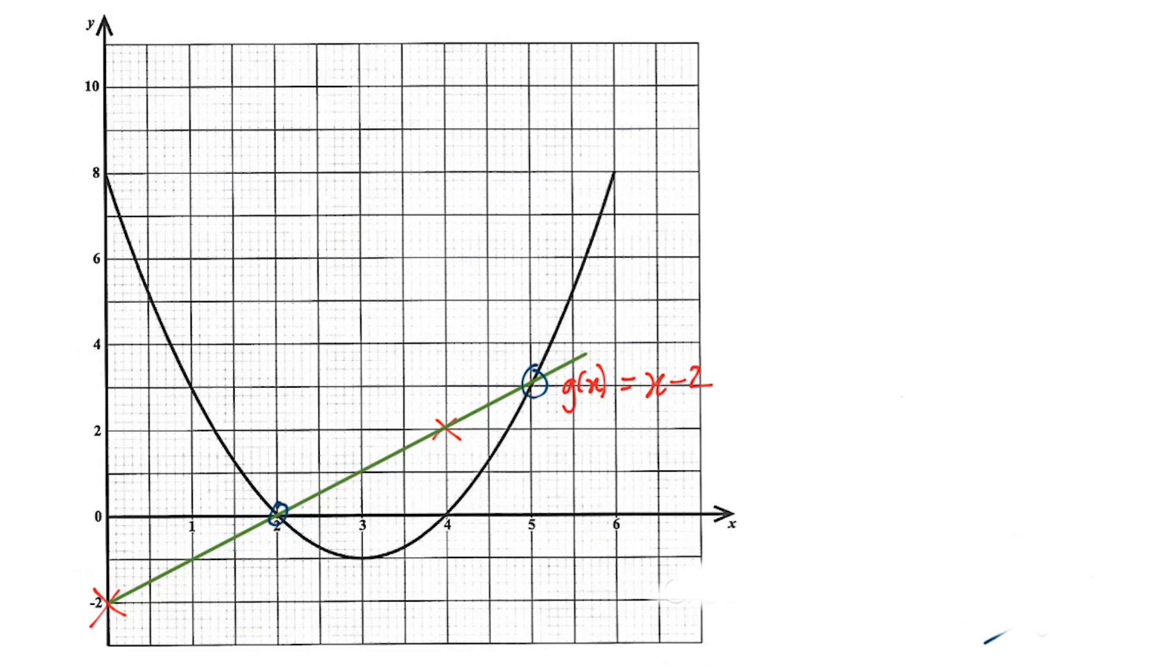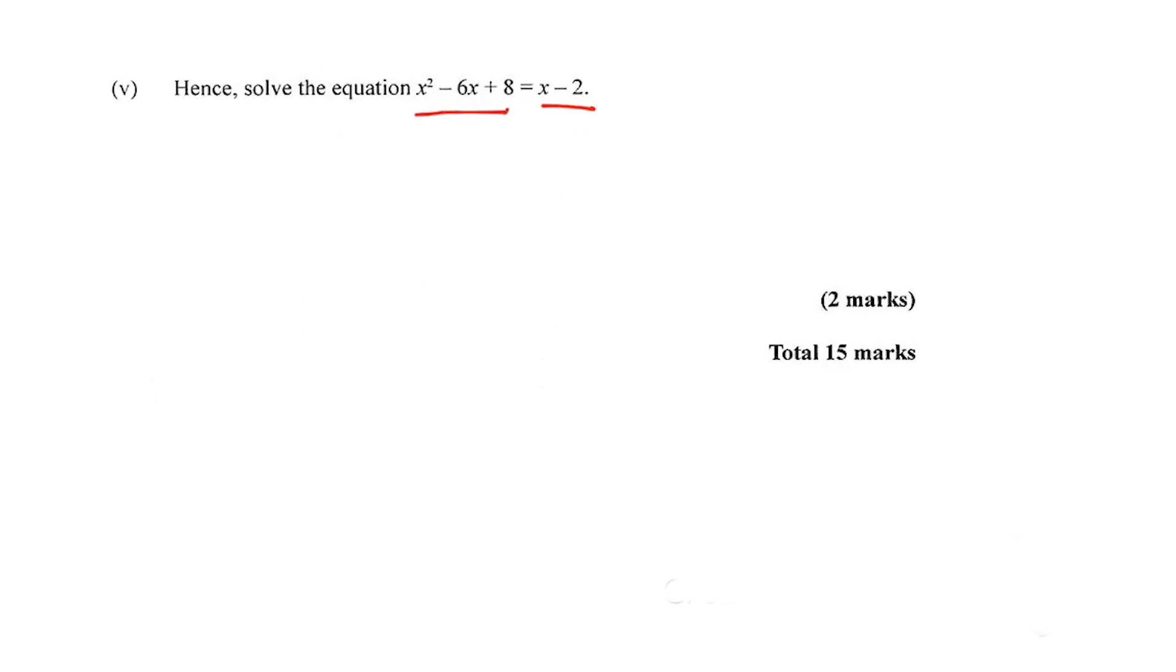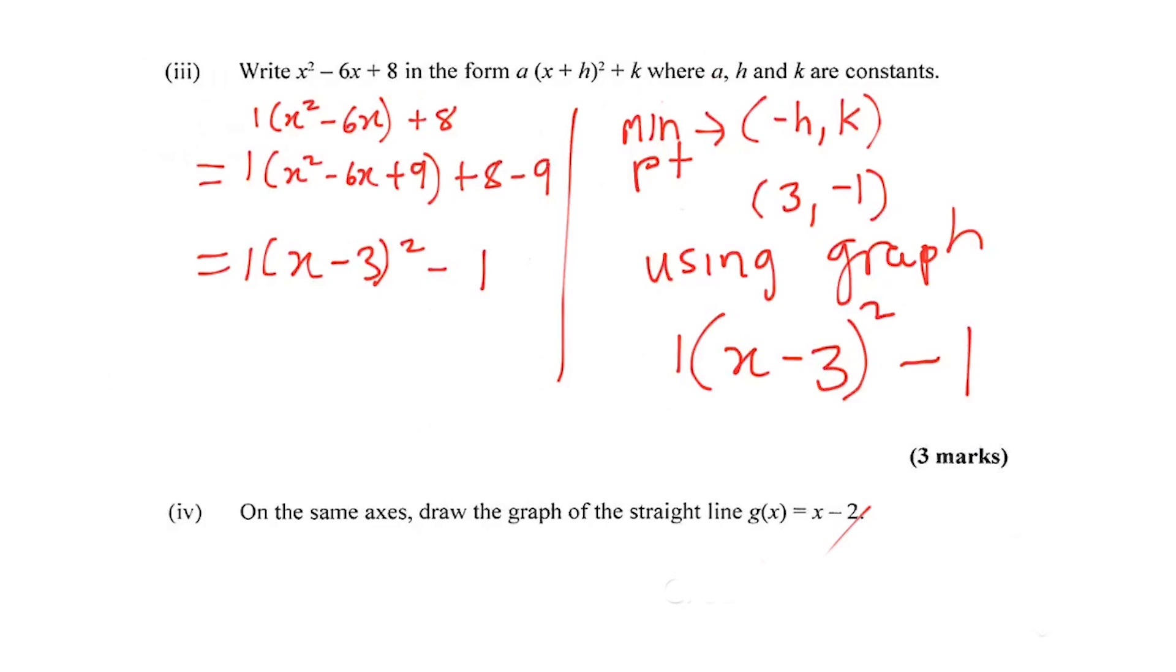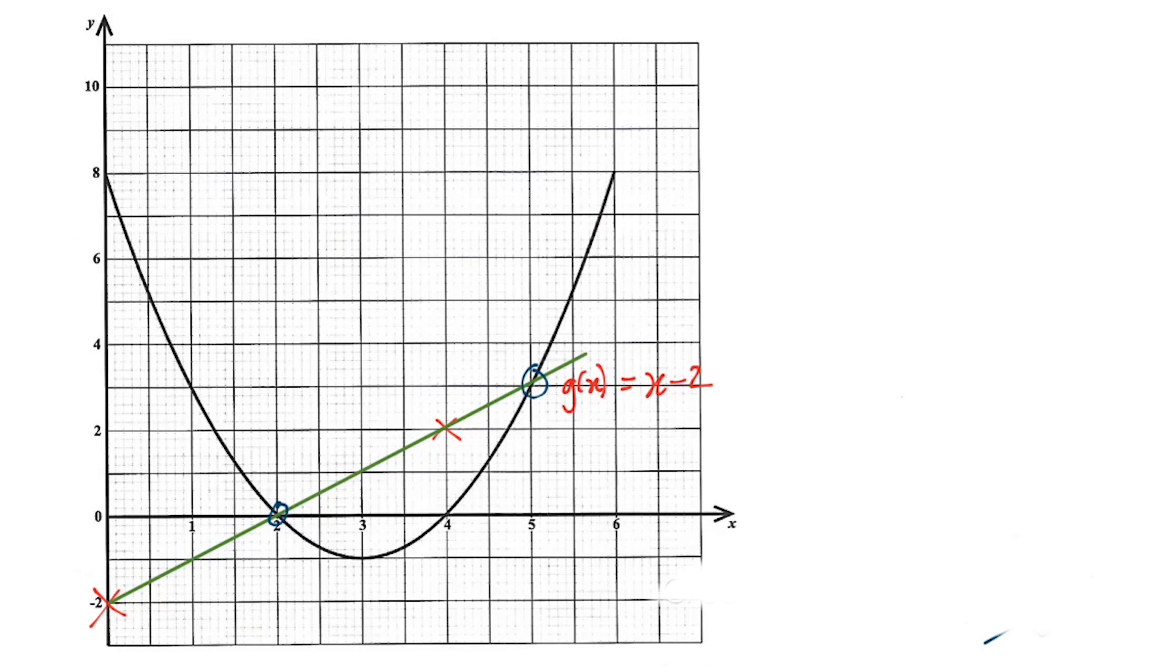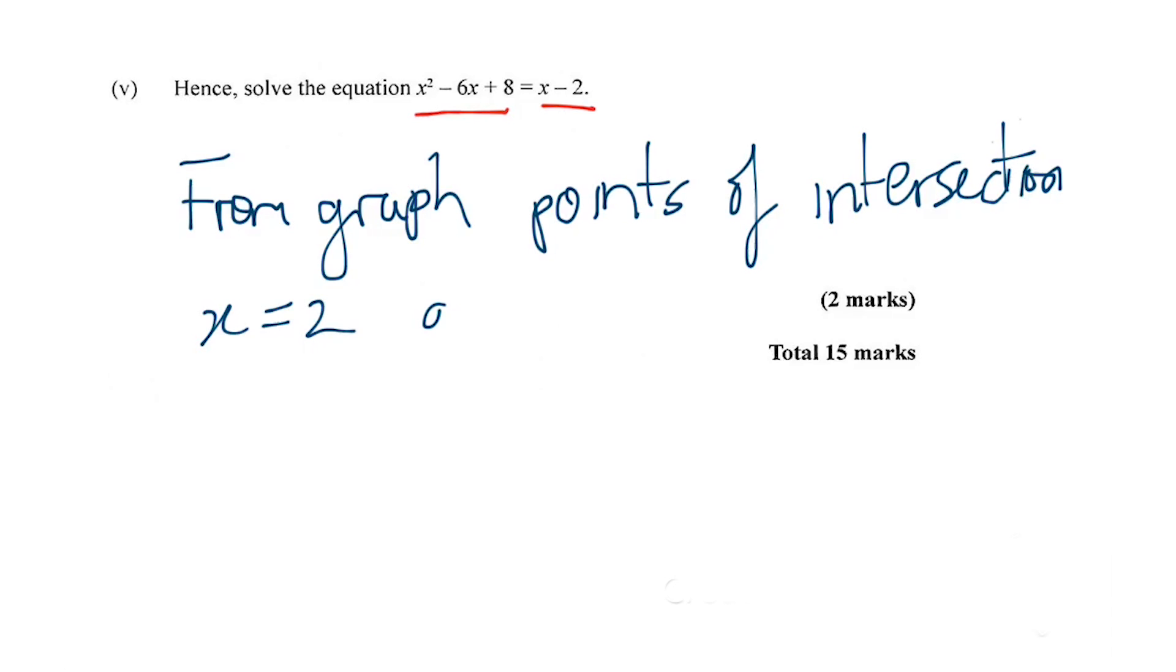To solve that, you just need to find where the points of intersection are—right here and right there. If we just solve an equation, we just need the x values. So the x values at those points of intersection are 2 and 5 from the graph. This one lines up to 2 and this one lines up to 5. So from the graph, points of intersection: x = 2 and x = 5. Collected those marks and roll out.